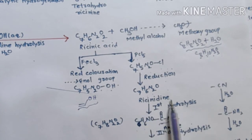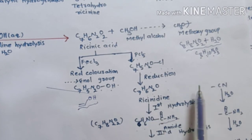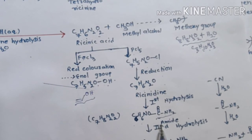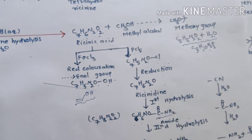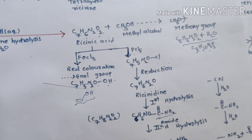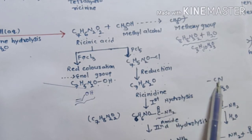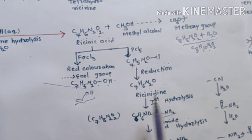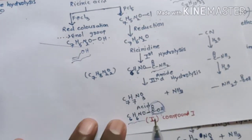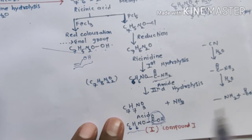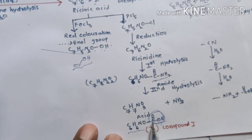When resinidine is subjected to hydrolysis, it undergoes hydrolysis in two steps. In the first step it gives us an amide, and in the second step this amide undergoes hydrolysis to form a carboxylic acid along with one molecule of ammonia. The carboxylic acid and ammonia are obtained from the amide, which in turn comes from a cyanide — meaning resinidine contains a cyanide group in it.